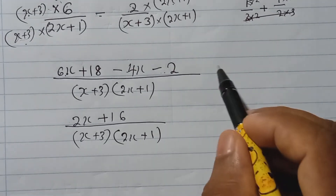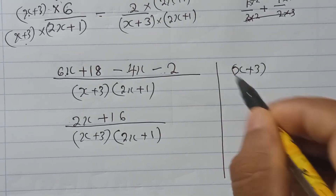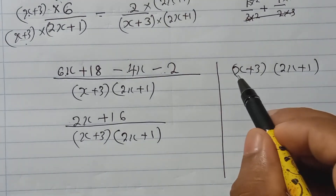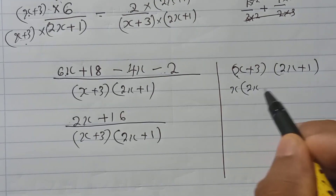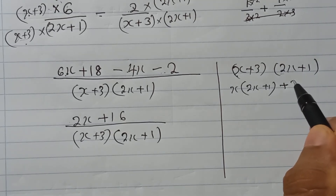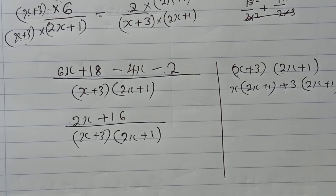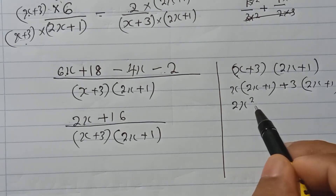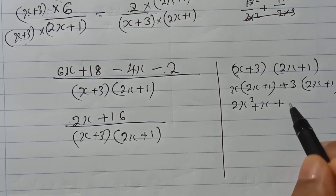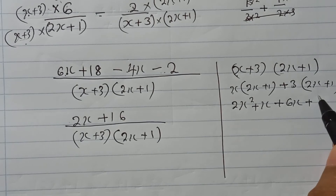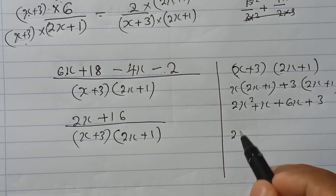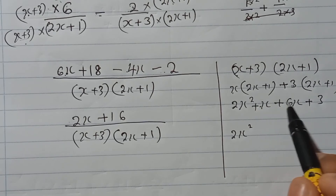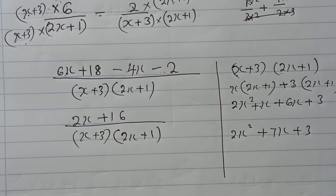We can further simplify by expanding the denominator. When you have two brackets, multiply each term: x times 2x gives 2x squared; x times 1 gives x. Then 3 times 2x gives 6x; and 3 times 1 gives 3. Combining like terms: 2x squared, then x plus 6x gives 7x, and plus 3.